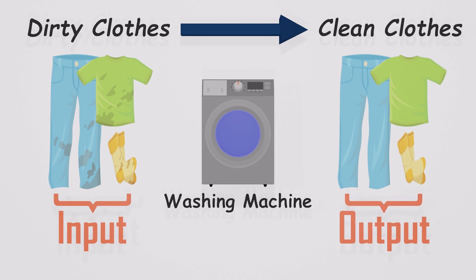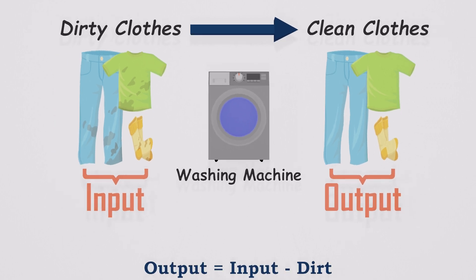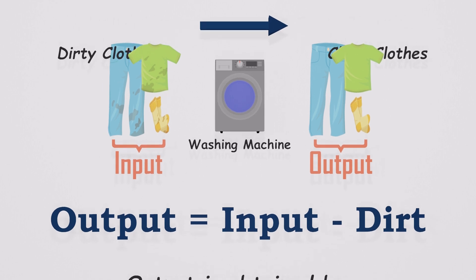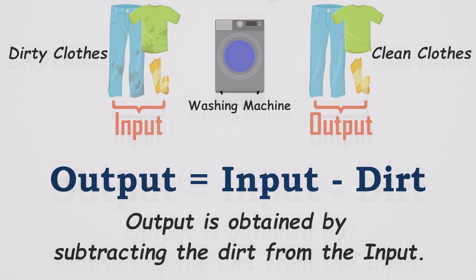In fact, we can represent this functionality of a washing machine using a simple equation. This equation shows that the output, which is the clean clothes, is obtained by subtracting the dirt from the input, which is the dirty clothes. This is a simple function that represents what happens to the inputs in a washing machine.